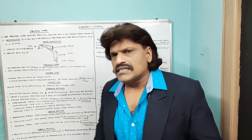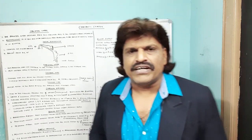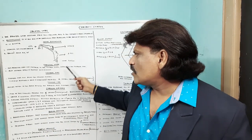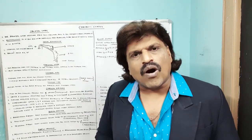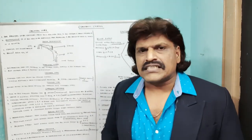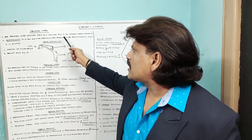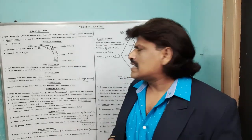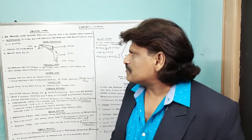Cerebral cortex. The cerebral cortex has got frontal lobe, parietal lobe, temporal lobe and occipital lobe. The frontal lobe extends from the frontal pole to the central sulcus, above the sylvian fissure.